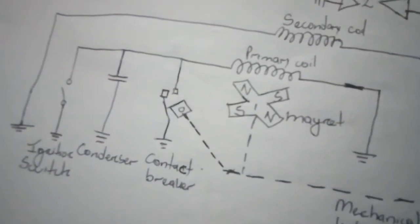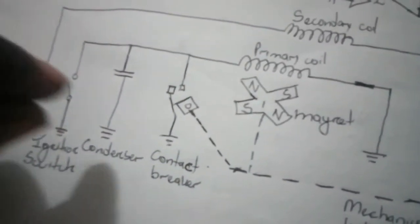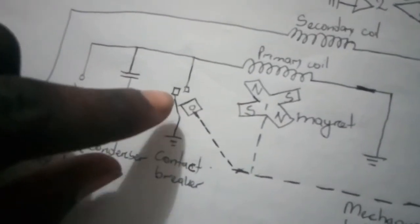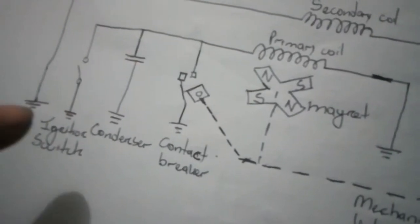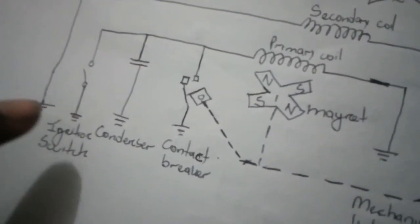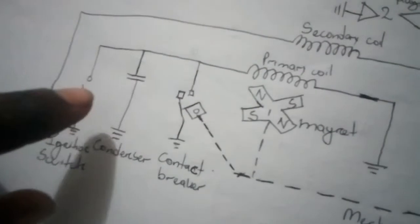In the high tension system, we don't want these contacts to be eroded quickly because of sparking. The ignition switch helps us short circuit the primary coil.